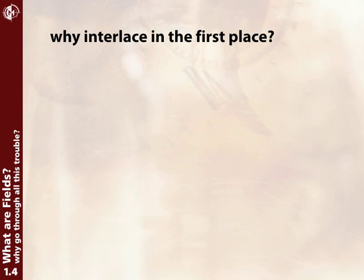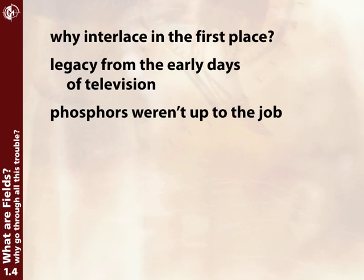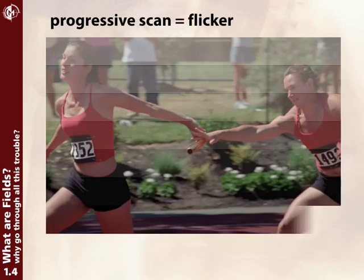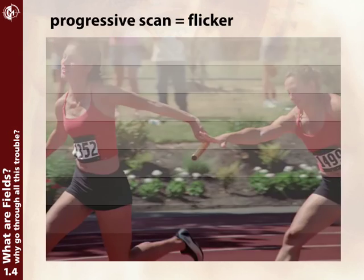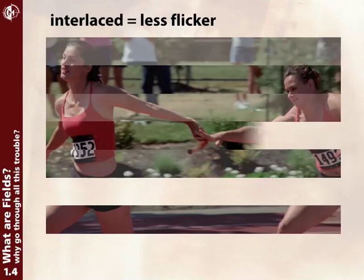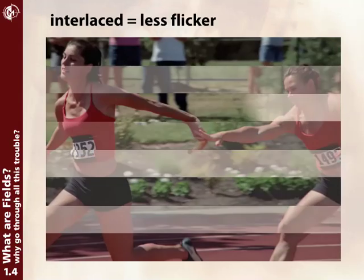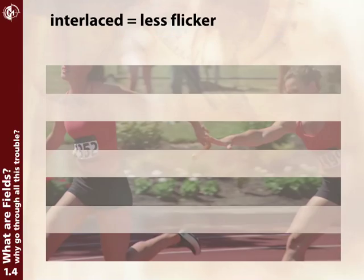Why are we going through all this trouble with interlaced video? Why isn't everything just progressive scan? Well, it's an old legacy left over from early televisions. The problem was the phosphors used in the screens of early TVs couldn't hold an image very long. If they drew every single line from top to bottom — the progressive scan way — by the time they got back to the top, the image would be too dim and you would have a noticeable flicker. They came up with the idea of doing alternating lines: you reached the bottom twice as fast, went back to the top, and started filling in every other line. This made the flicker not quite as obvious.